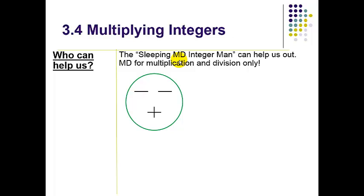So here's what I like to do: because doctors are usually pretty tired, so I like to make a bow tie, put a little MD—he's a medical doctor that helps us out with multiplication and division. And so again, that reminds us it's only for multiplication and division. Everybody wants to use this for addition and subtraction—no, you can't do that. So the Sleeping Integer Man only helps us for multiplying and dividing. Same signs positive, different signs negative.